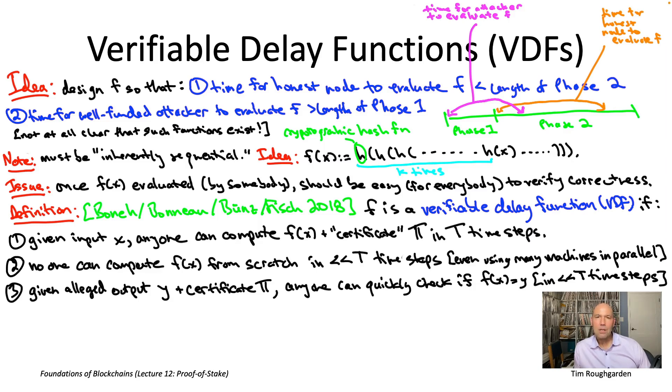And that already seemed like a really strong thing to want. And so now we've sort of clarified our understanding of what these functions might look like. We understand that, okay, in particular they must be in some sense inherently sequential. We talked about iterating a cryptographic hash function like SHA-256 is one possible example.